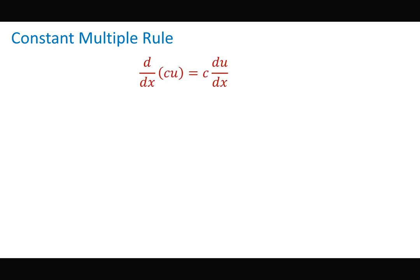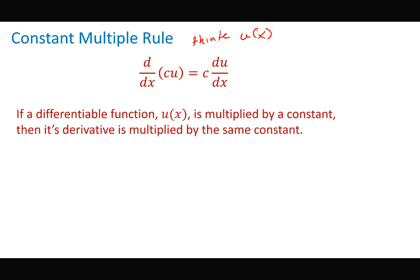The constant multiple rule is different than the constant rule. A constant multiple would be like c, some number, times u. In calculus, u and v are used to represent functions instead of f(x) or y(x). The constant multiple rule says we can simply bring the constant out front. So if it was 5x squared, we would bring the 5 out and just do the derivative of x squared.